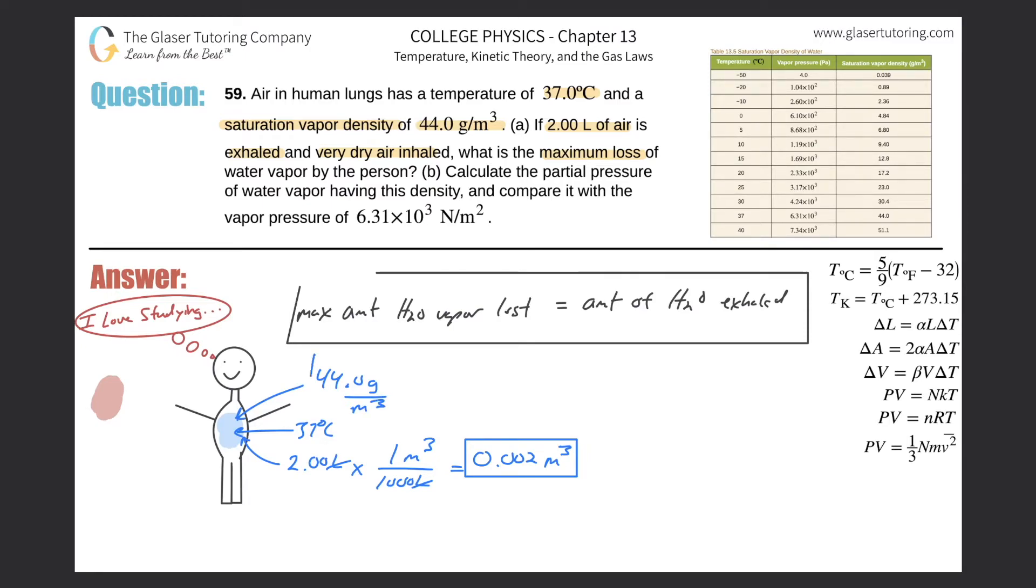Consider this: this is the max density, and then consider the volume of air we are exhaling. Can you come up with an idea now of how to solve for the amount—it could be mass? If we know the maximum density of water vapor in the air and we know the volume of air that we're exhaling, can we find the mass of water vapor that's exhaled?